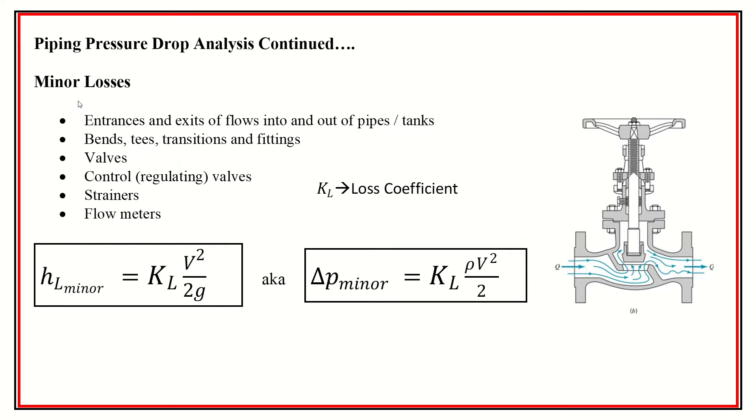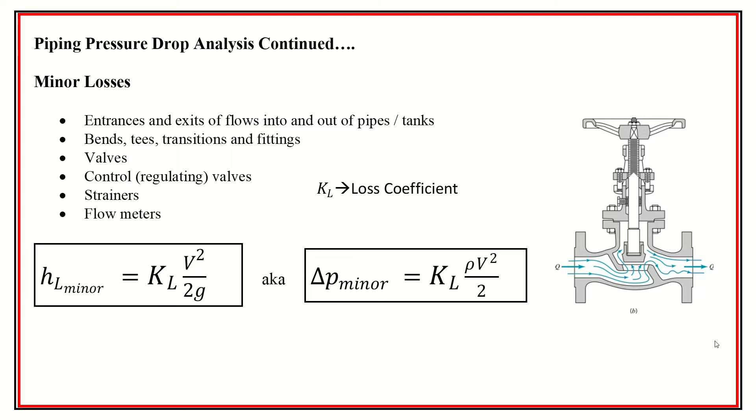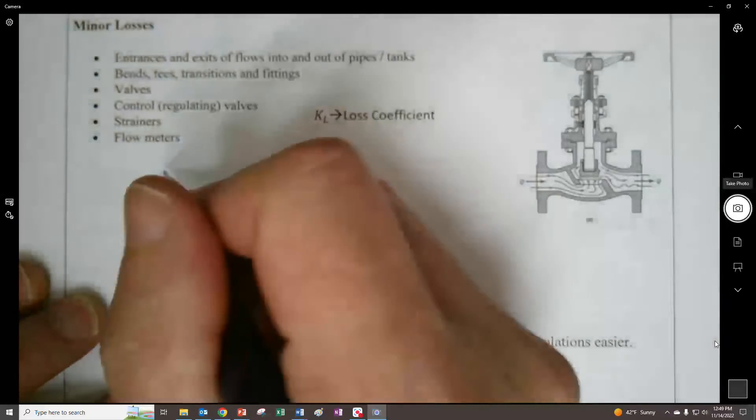And then with the inevitable goal of sizing pumps for the system pressure drops. So these minor losses include entrances and exits of the flow into and out of pipes and tanks, bends, tees, transitions, fittings, valves, control valves, strainers, flow meters.